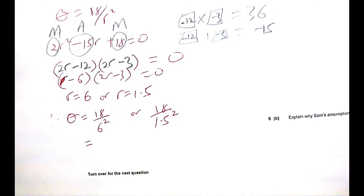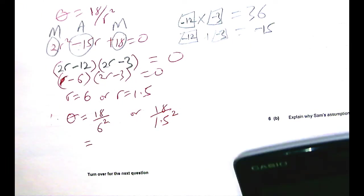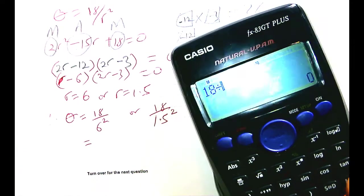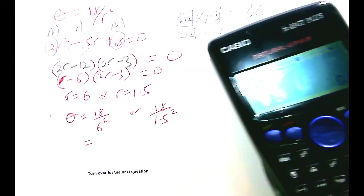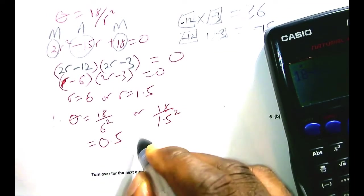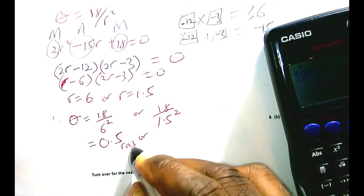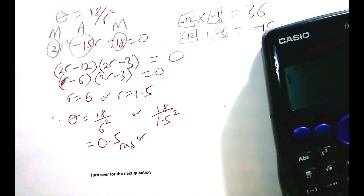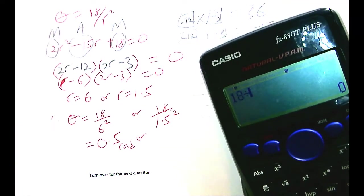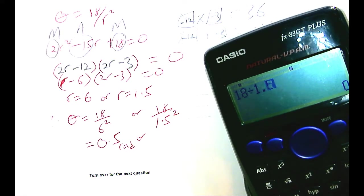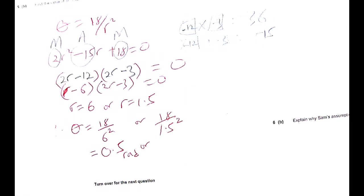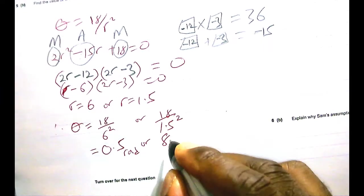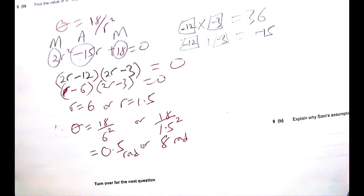Now, using our calculator, we can do this. So 18 divided by 6 squared—that is 0.5, and it's in rad, by the way. And in the other case, 18 divided by 1.5 squared, and that is 8. So 8 rad.